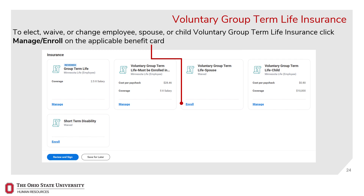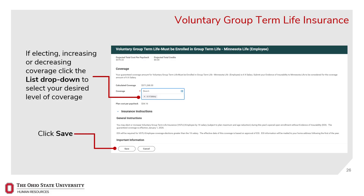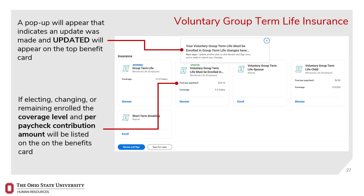To elect, waive, or change employee, spouse, or child voluntary group term life insurance, click Enroll or Manage on the applicable benefits card. Click Select to enroll or change coverage, or Waive to opt out of coverage, then click Confirm and Continue. If electing, increasing, or decreasing coverage, click the List dropdown to select your desired level of coverage, then click Save. A pop-up will appear indicating an update was made. If waiving, waived will be listed on the card. If electing, changing, or remaining enrolled, the coverage level and per paycheck contribution amount will be listed on the benefits card.